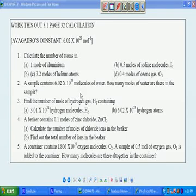Now let's try question number four. A beaker contains 0.1 moles of zinc chloride ZnCl2. A, calculate the number of moles of chloride ions in the beaker. B, find out the total number of ions in the beaker.